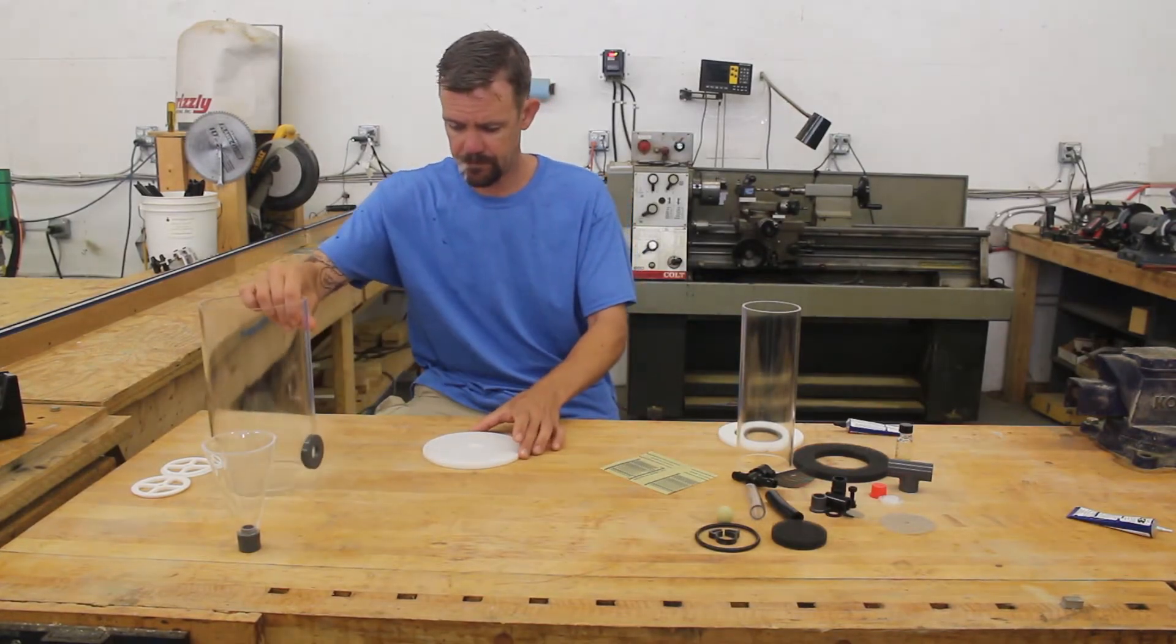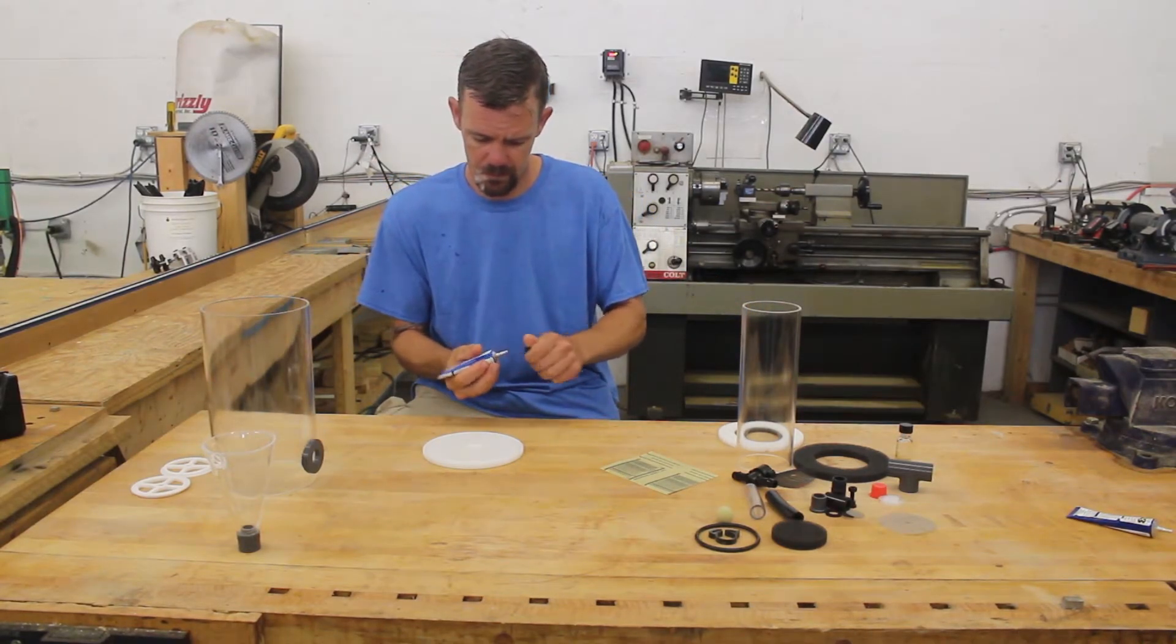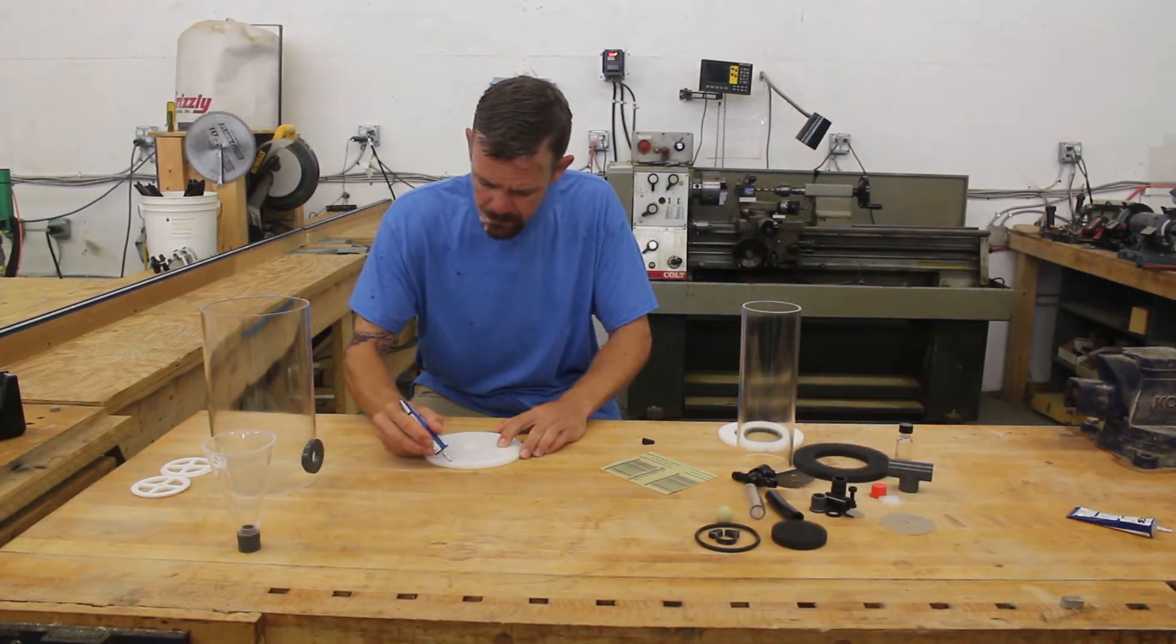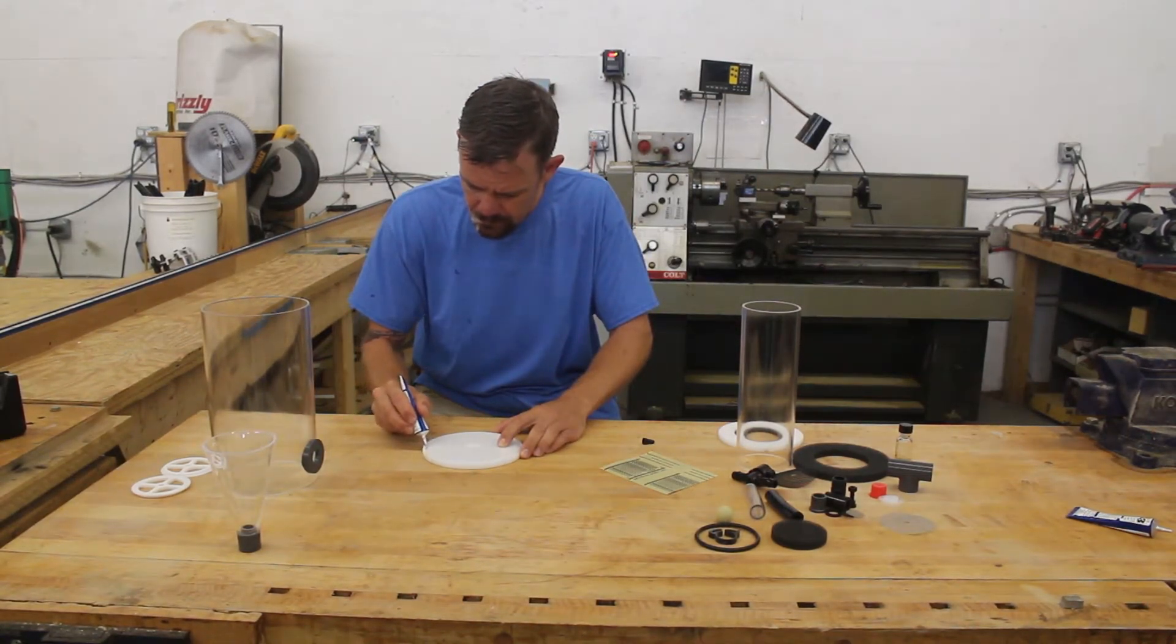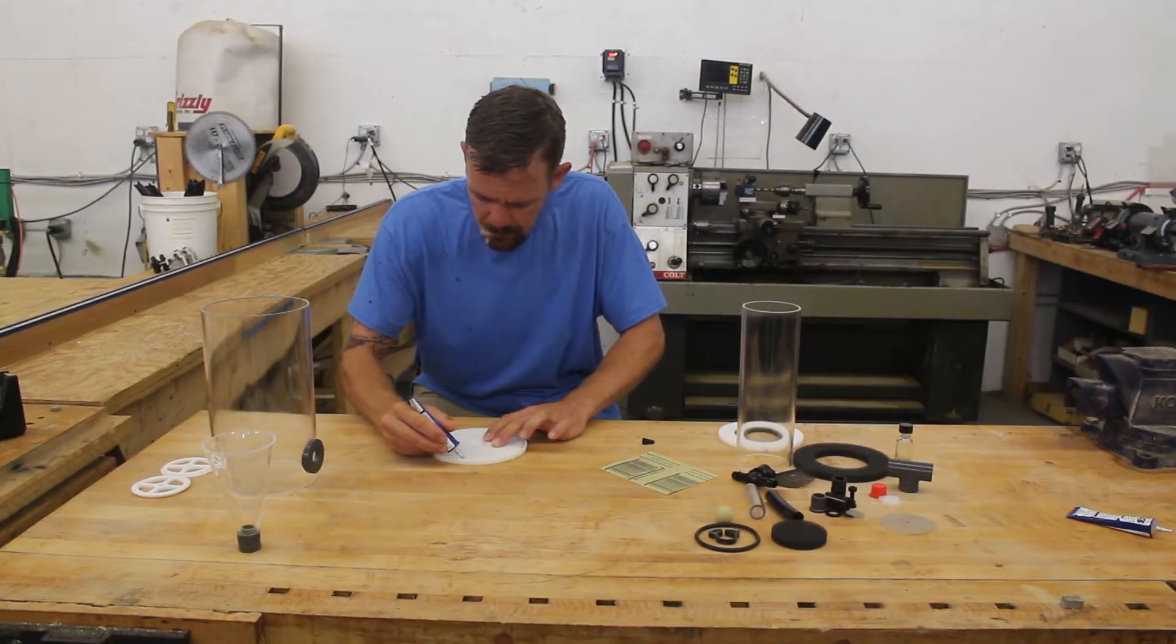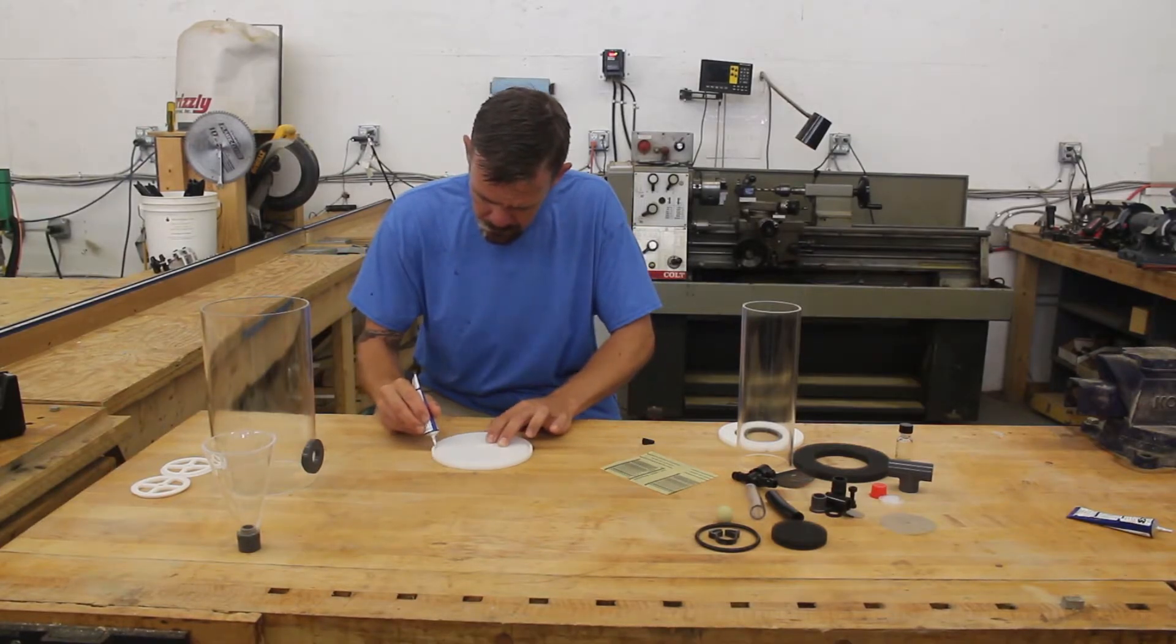About an hour later, we can now glue the base to the outer chamber. We are going to use the clear solvent in the blue tube for this. Run a bead in the base and then place the chamber on. Make sure the saddle orients towards the base and not the top.